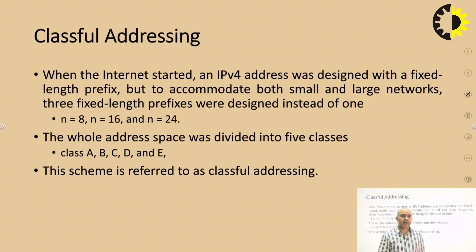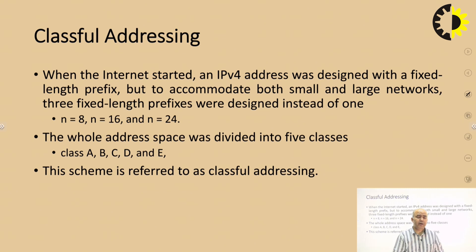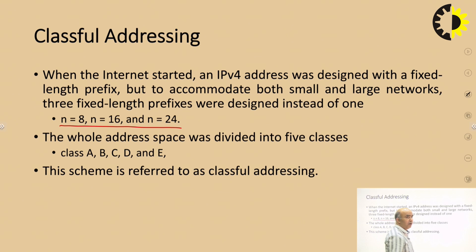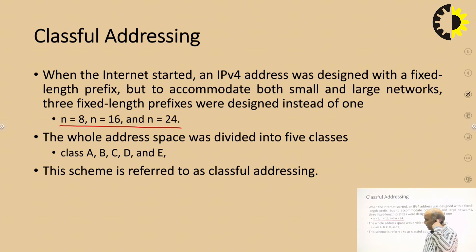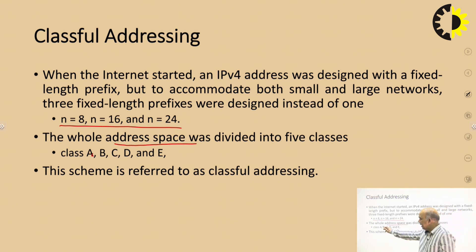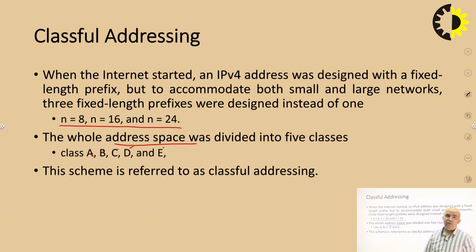When the internet started, IPv4 was designed with a fixed-length prefix. But that fixed-length prefix was not able to accommodate small and large networks. So instead of a single fixed-length prefix, they divided it into 3 prefixes: n=8, n=16, and n=24. They divided the address space into 5 classes: A, B, C, D, and E. This scheme is referred to as classful addressing.